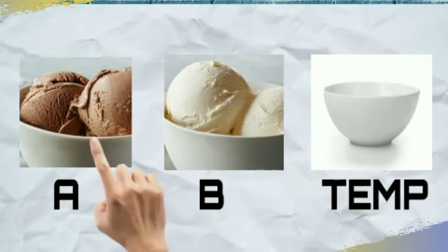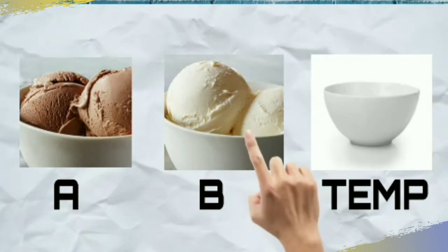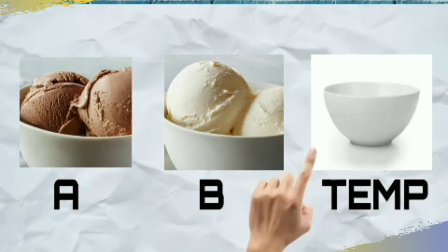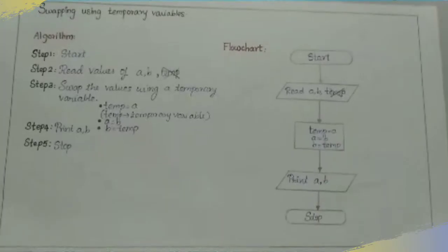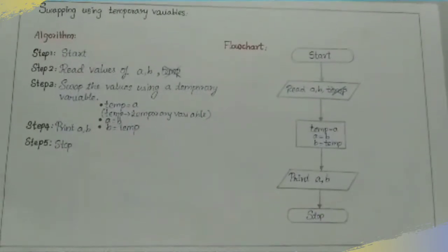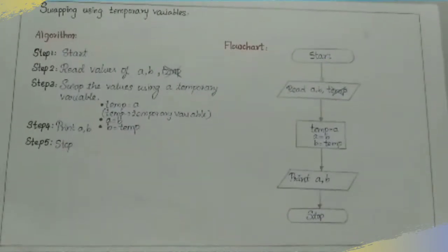First A was vanilla, now A is chocolate. Next B was chocolate, now B is vanilla. This is how we achieve the swap because temp was used as the empty temporary variable. So now let's see the flowchart.